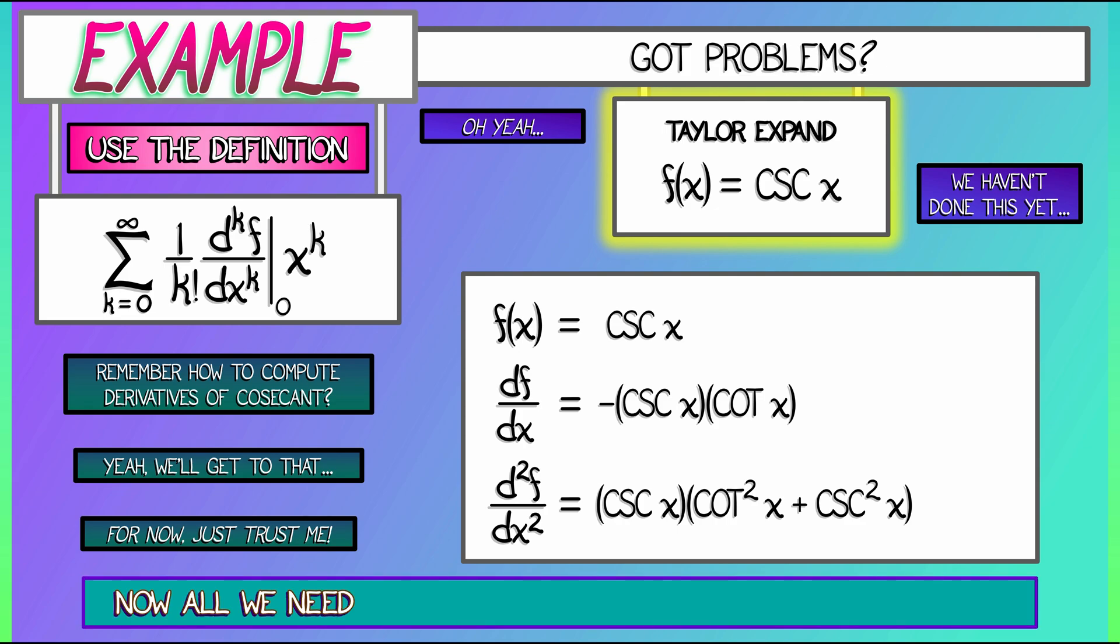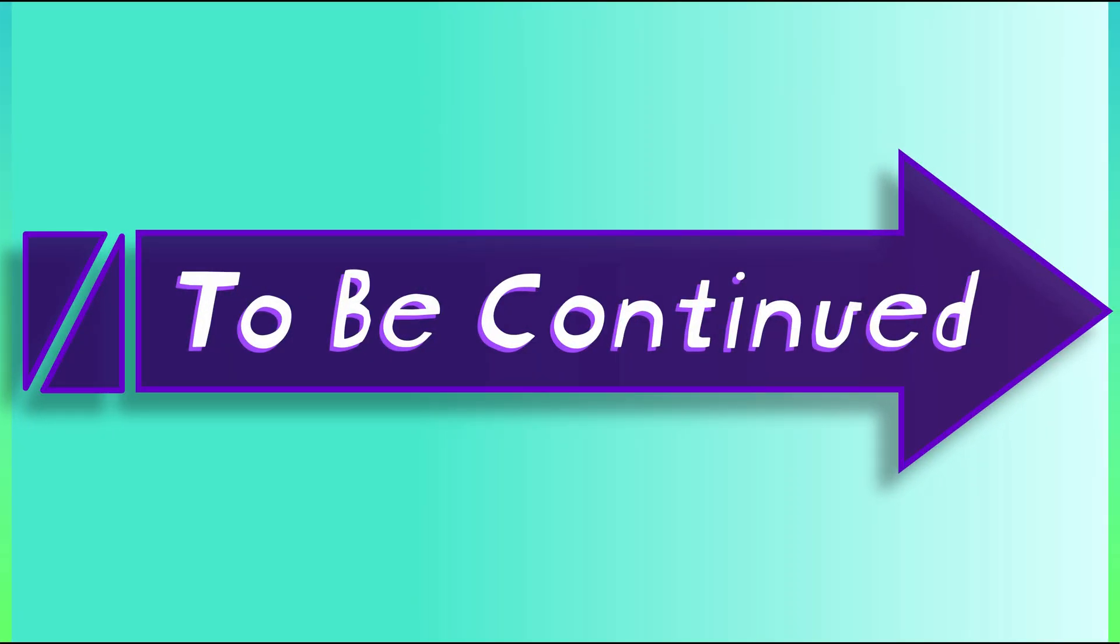Now, all we got to do to get the first couple of terms in the Taylor expansion is just evaluate these guys at zero. And what do you think happens? Well, that doesn't work out so well because cosecant is one over sine, sine of zero is zero, can't divide by zero. Oops, made a mistake there. And of course, cosecant is really bad at zero, so there's no way we're going to be approximating this with polynomials.